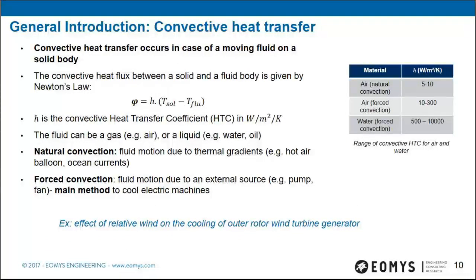Convective heat transfer occurs when a moving fluid acts on a solid body, following Newton's law. The heat flux is linearly dependent on the temperature difference between solid and fluid, with coefficient H — the convective heat transfer coefficient. The fluid can be a gas like air or a liquid like water or oil. There are two kinds: natural convection, where fluid motion is due to thermal gradients, and forced convection, driven by an external source like a fan — the main method to cool electric machines. Typical H values range from up to 10 for natural air convection, up to 300 for forced air, and up to 10,000 for water.